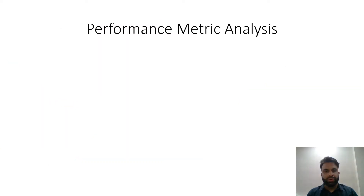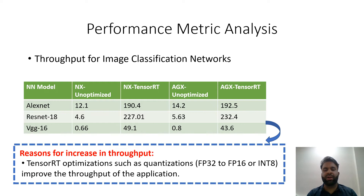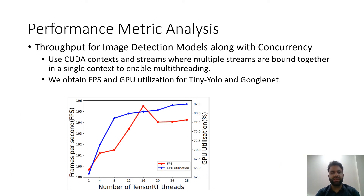For the performance metric analysis, we examined throughput for image classification networks — both unoptimized and TensorRT optimized. The table shows that throughput for TensorRT networks is significantly much higher than unoptimized networks, on both NX and AGX. The reason is quantization: TensorRT maps FP32 to FP16 or INT8. Both NX and AGX support INT8 quantization, which is used in these experiments, leading to a very significant throughput increase.